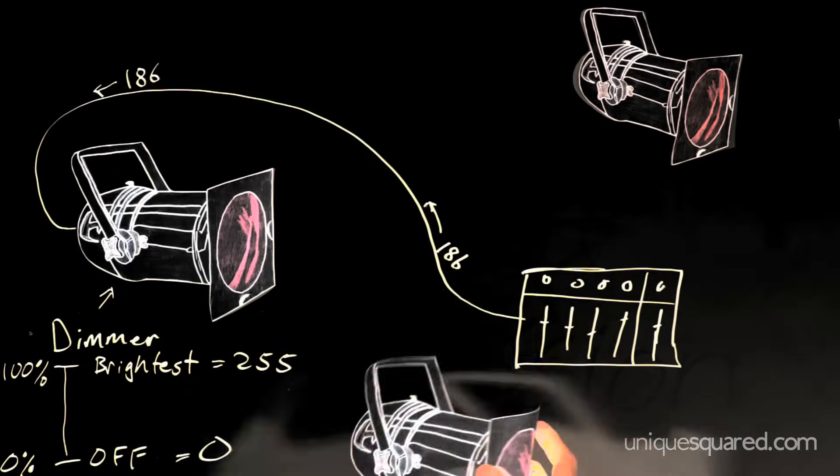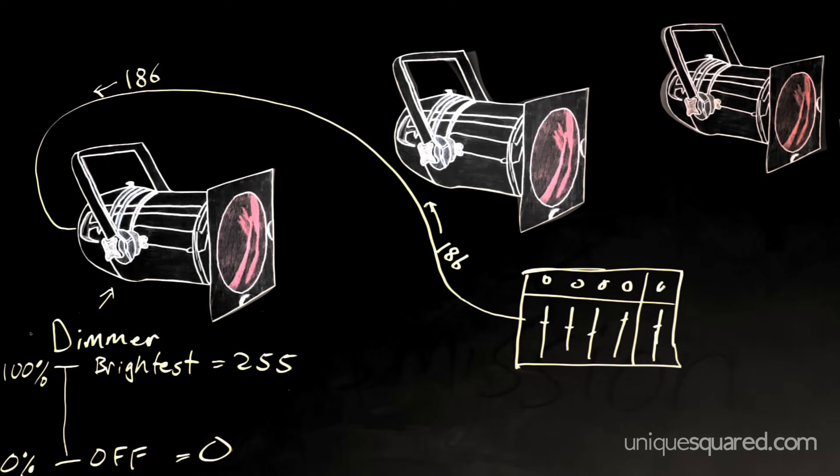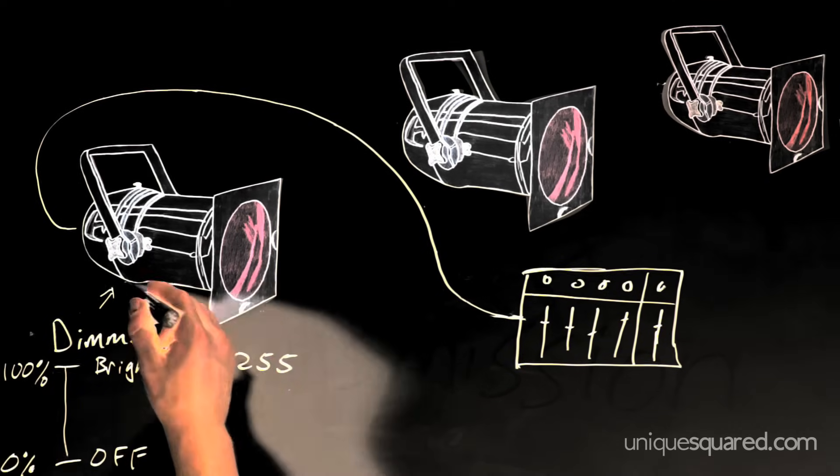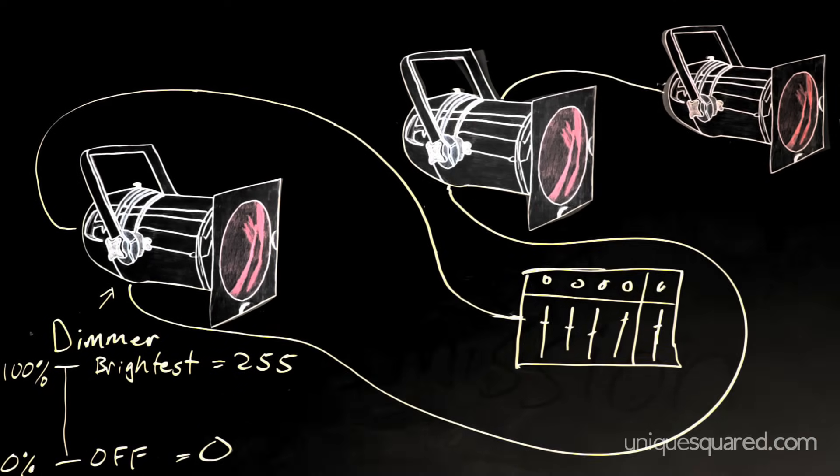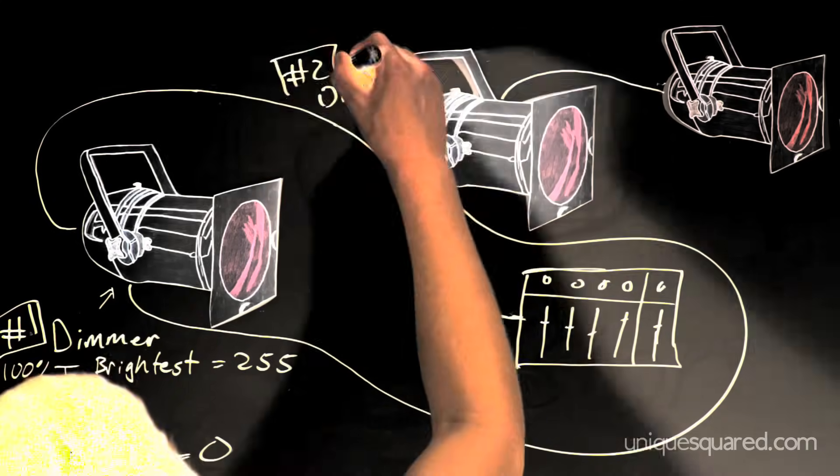So let's say we've got three more of the same lights and the same controller. First, we must connect them in series. We still want to send values that will control brightness, but we want to control each light separately. So we give each light an address.